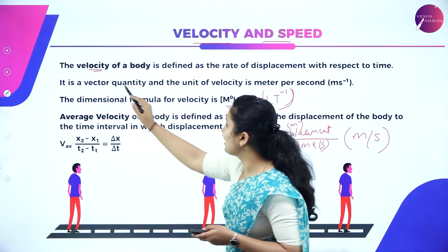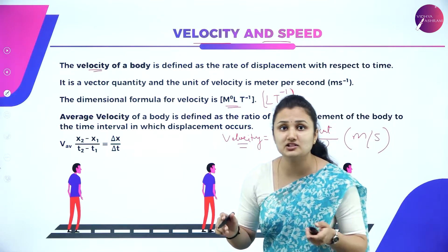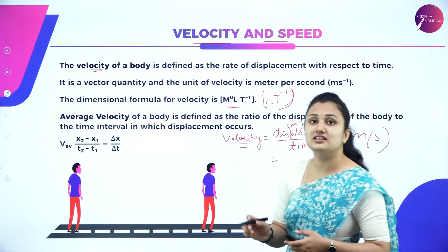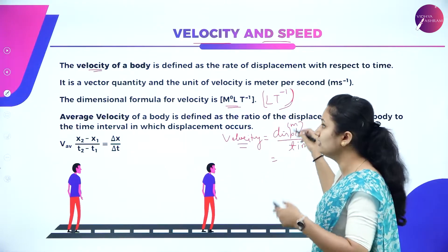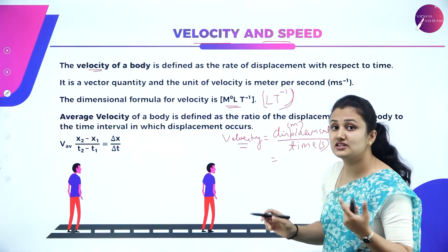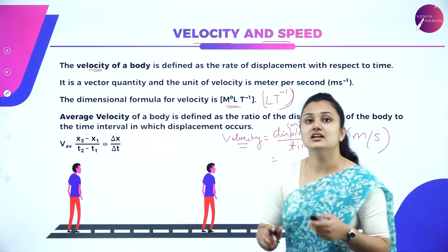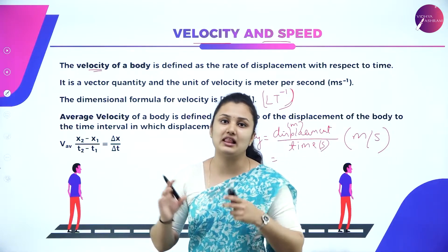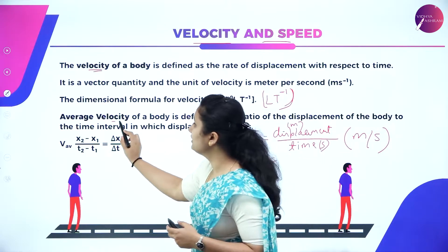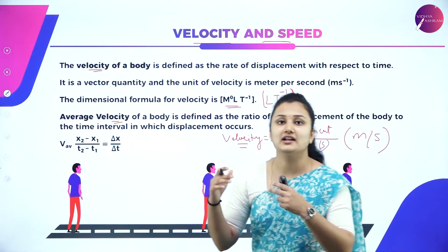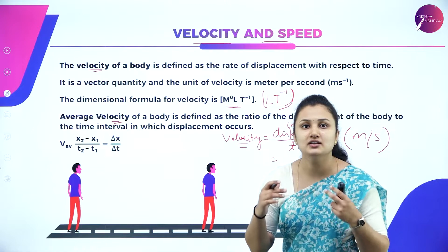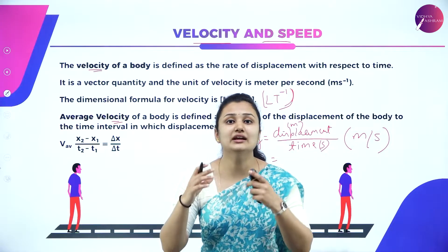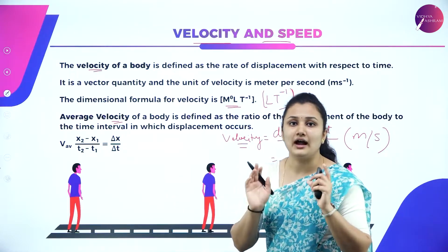Speed is distance by time and velocity is displacement by time. Displacement is change of position, and since displacement is a vector quantity, velocity is also a vector quantity. Vector quantity depends on both magnitude and direction, whereas scalar quantity depends only on magnitude. I hope velocity and speed are clear.